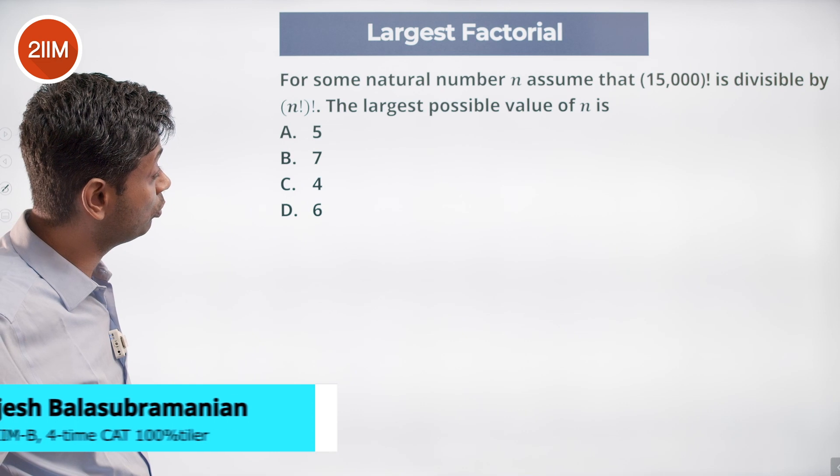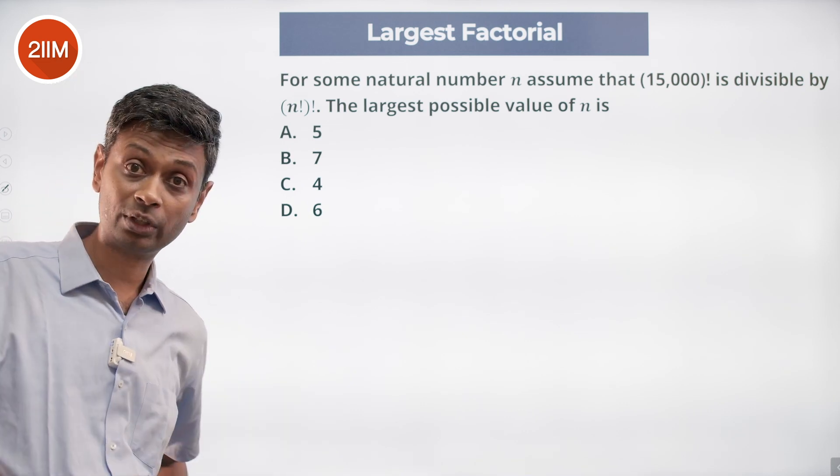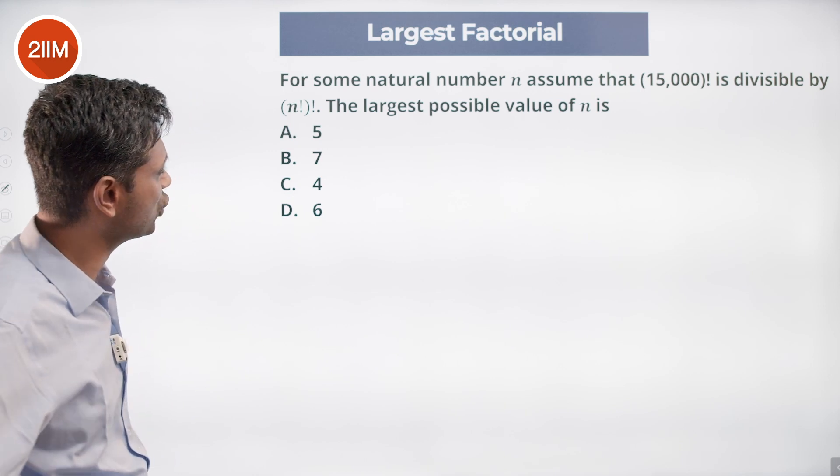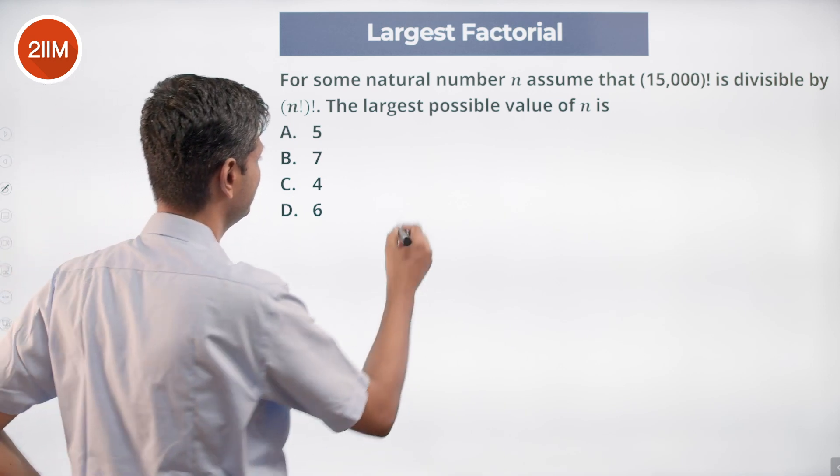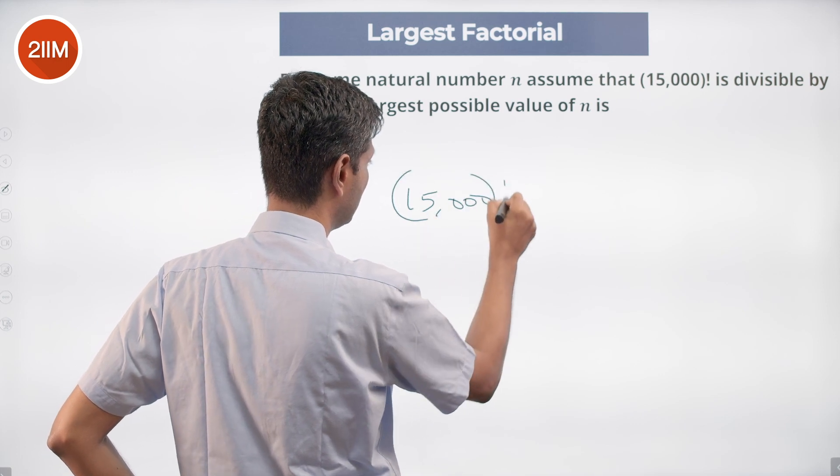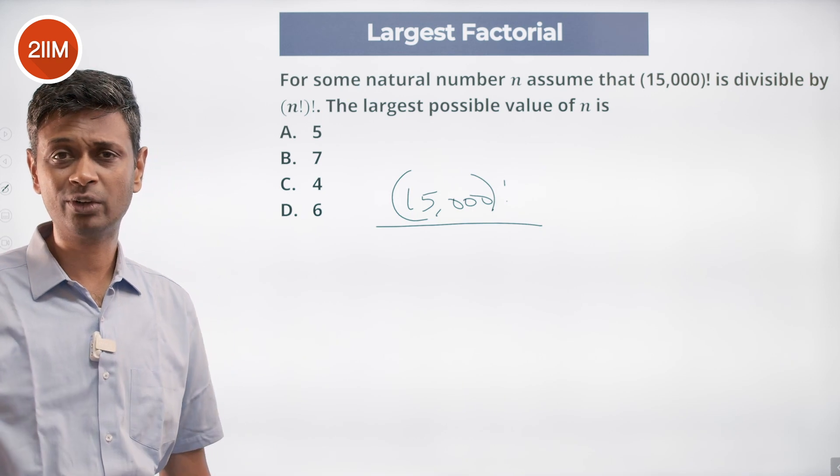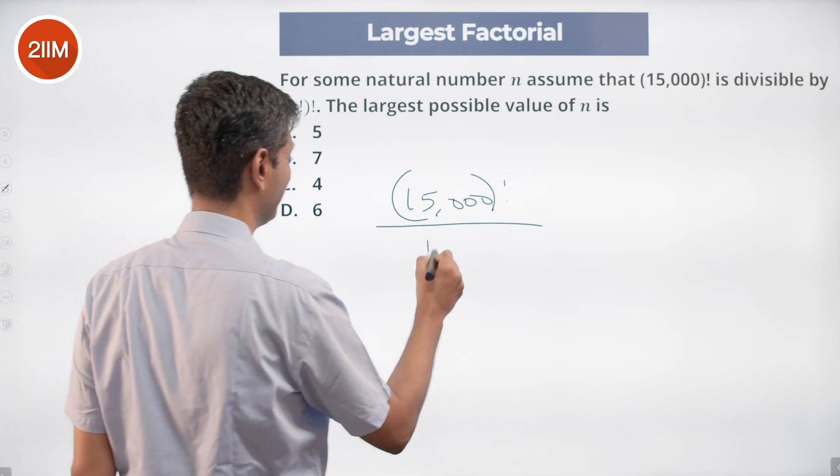For some natural number n, assume that 15,000 factorial is divisible by n factorial factorial. The largest possible value of n is... 15,000 factorial is divisible by 5 factorial factorial. 5 factorial is 120, divided by 120 factorial. This works. 5 works.